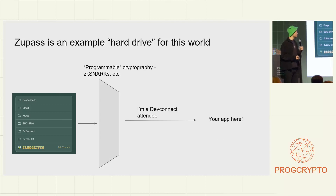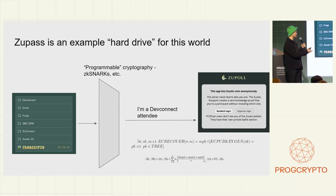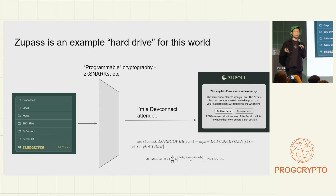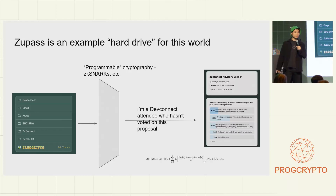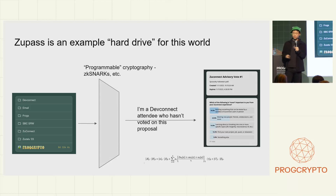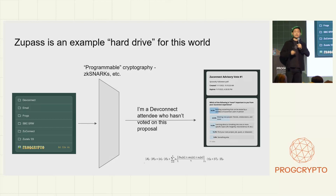ZooPoll is another website built by contributors not working on ZooPass or the issuance side. It integrates a similar auth pattern to ZooCat but inside a web page, with a flow that feels like OAuth — though that interaction is entirely happening with the user. ZooPoll also uses the same pattern for voting: it asks you to prove you are a DevConnect attendee who has not yet voted on a given proposal. ZooPoll is a tool used by Zuzulu and ZooConnect to conduct elections and advisory votes.